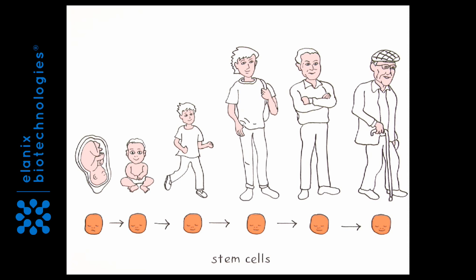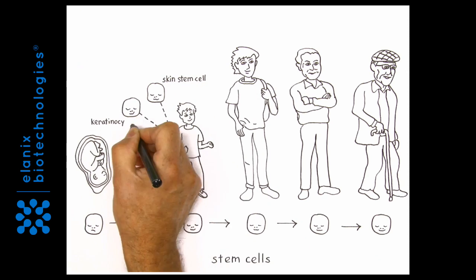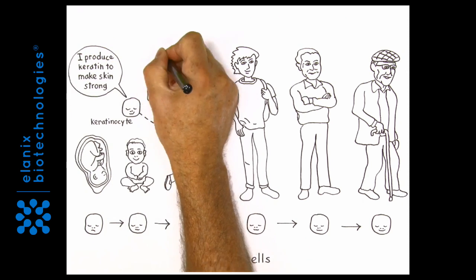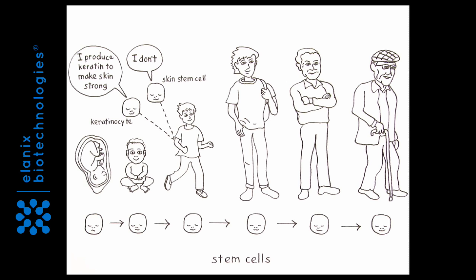Similar to seeds which play no role in direct development of leaves or roots, stem cells lack the characteristics of the terminally differentiated cells which make up a specific tissue.